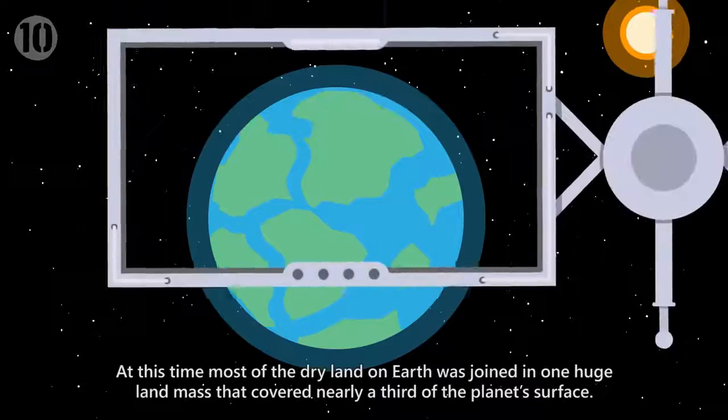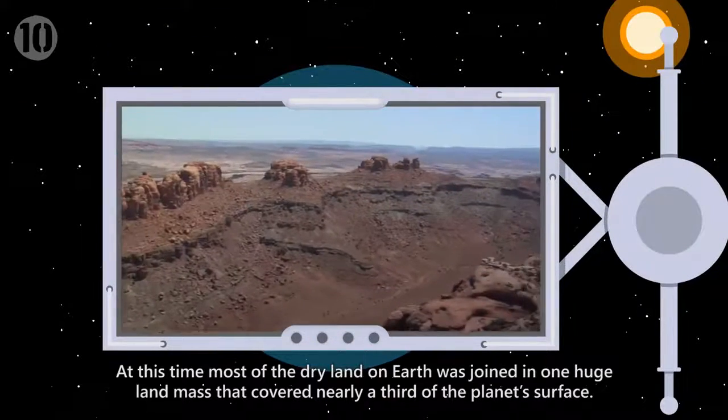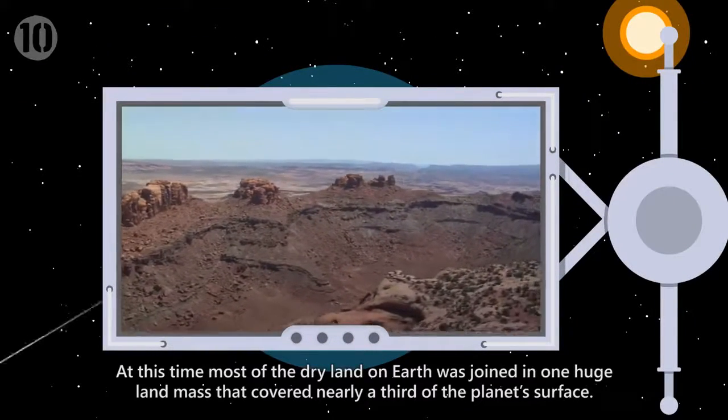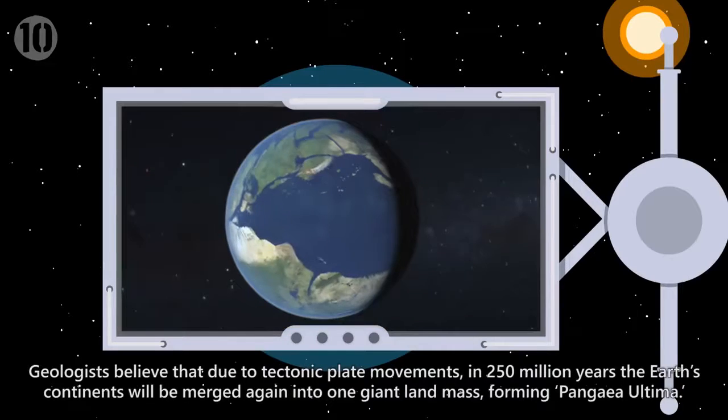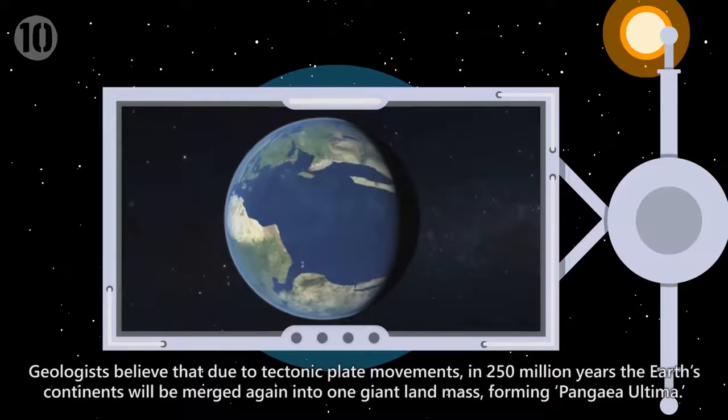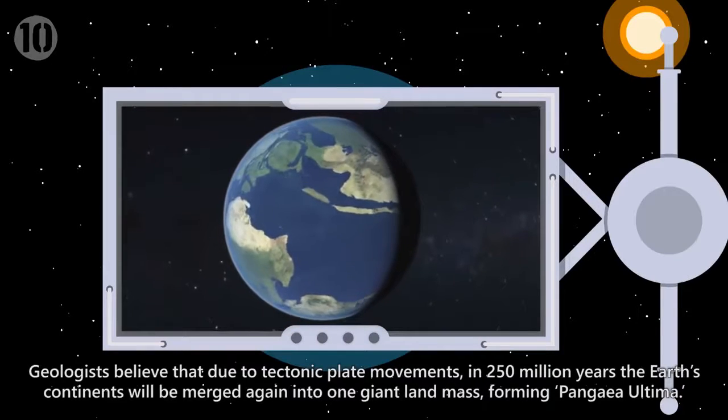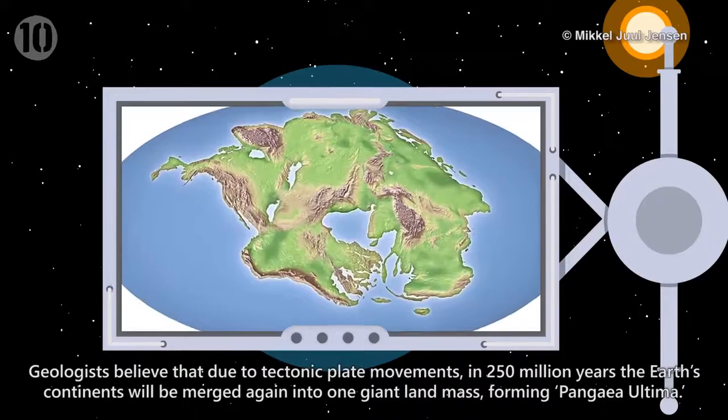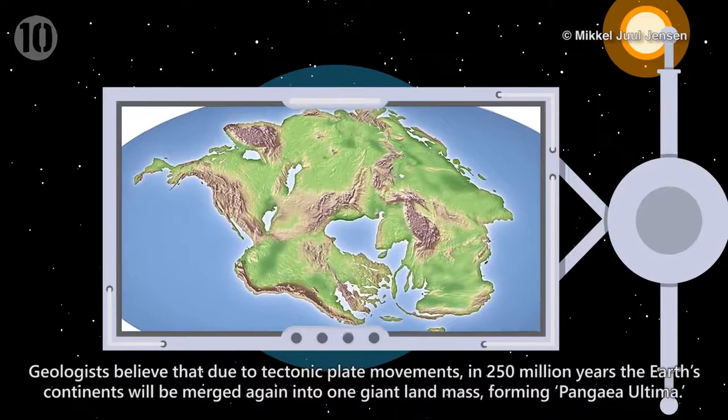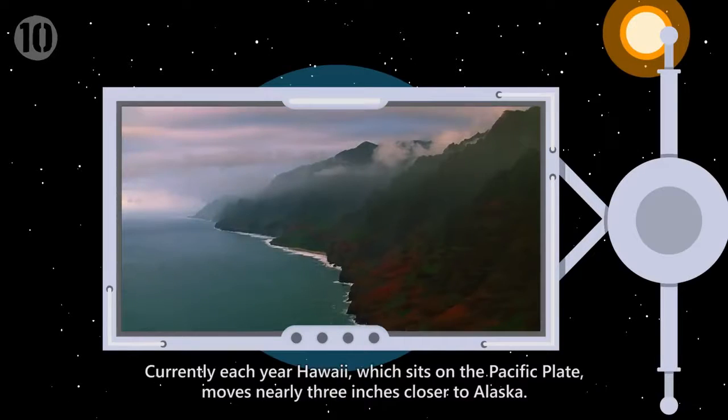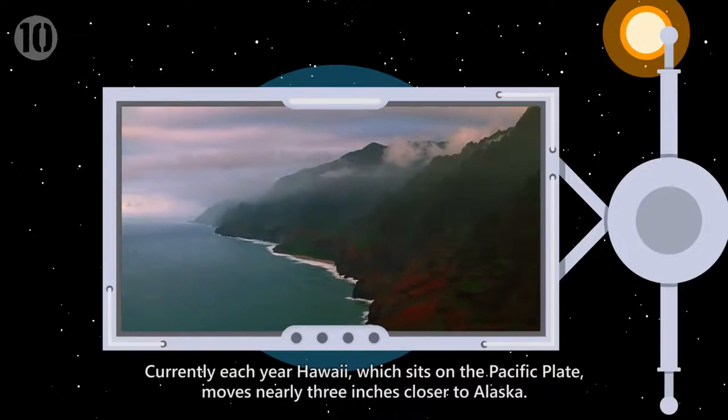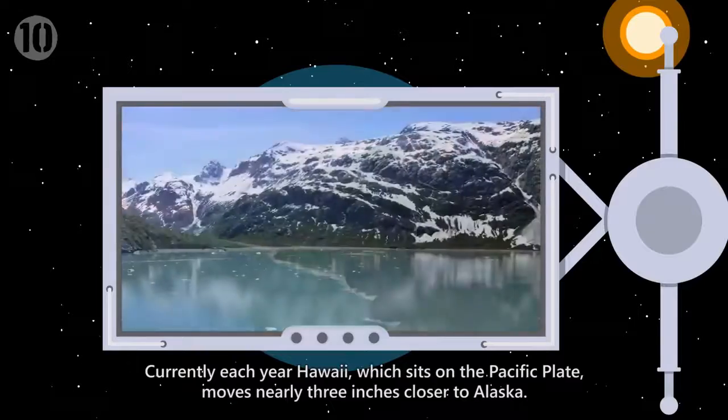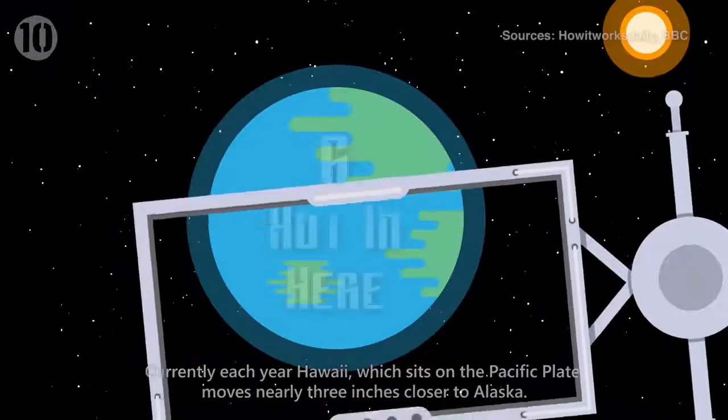At this time, most of the dry land on Earth was joined in one huge landmass that covered nearly a third of the planet's surface. Geologists believe that due to tectonic plate movements, in 250 million years the Earth's continents will be merged again into one giant landmass, forming Pangaea Ultima. Currently, each year, Hawaii, which sits on the Pacific Plate, moves nearly three inches closer to Alaska.